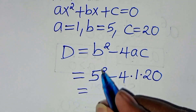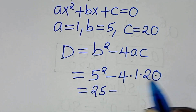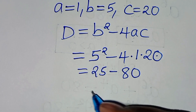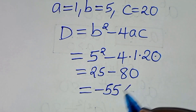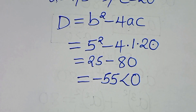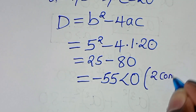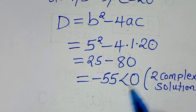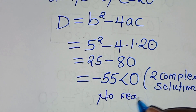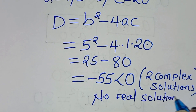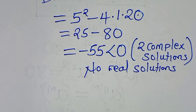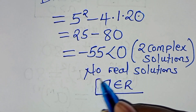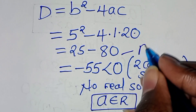So 5 squared is 25, minus 4 times 20 which is 80, giving 25 minus 80 equals negative 55, which is less than 0. This means we have two complex solutions and no real solution from this quadratic equation. Since a is a member of real numbers, this quadratic equation is rejected.